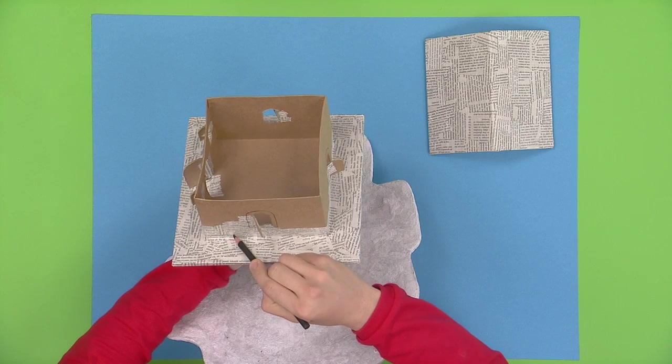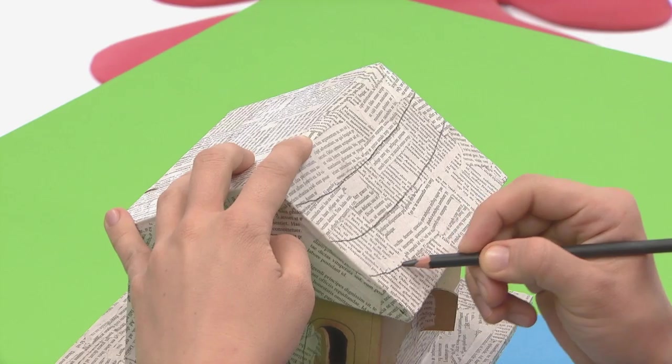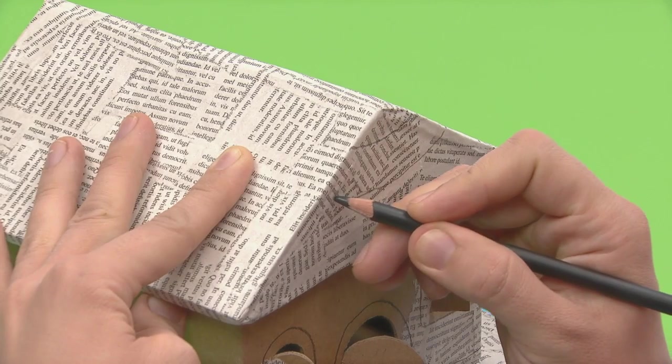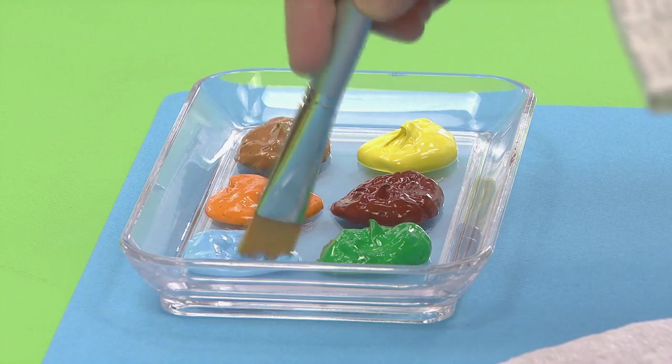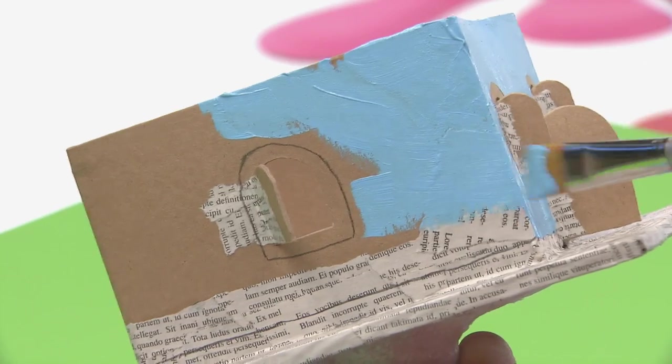Draw the details on the doors and the windows. Draw a baseboard on the space between the door and the ground. Make lines onto the rooftop. Now color it. Paint the house sky blue, but you can use any color you want.